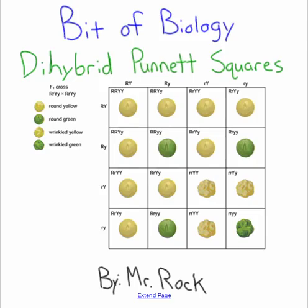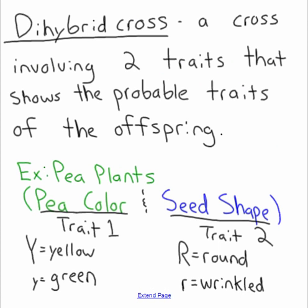This is a bit of biology with Mr. Rock, and today we are going to be talking about dihybrid Punnett squares. First, let's go over the definition. A dihybrid Punnett square, or a dihybrid cross, is a cross involving two traits that shows the probable traits of the offspring.